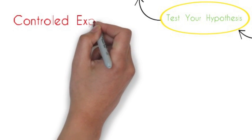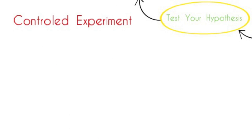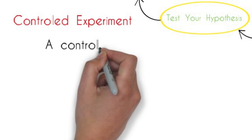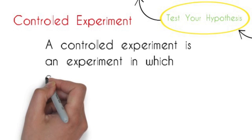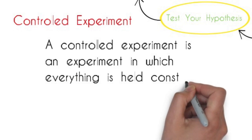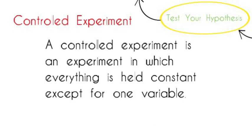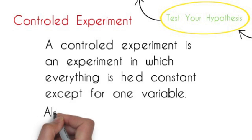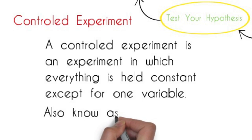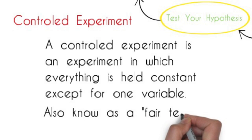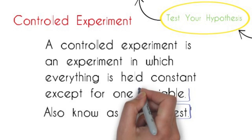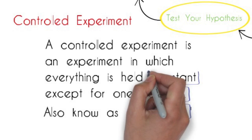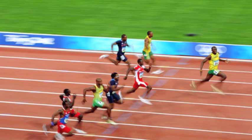So, what is a controlled experiment, you might ask? Well, a controlled experiment is an experiment in which everything is held constant except for one variable, also known as a fair test. We will discuss what a fair test, variable, and constant means in respect to a controlled experiment.